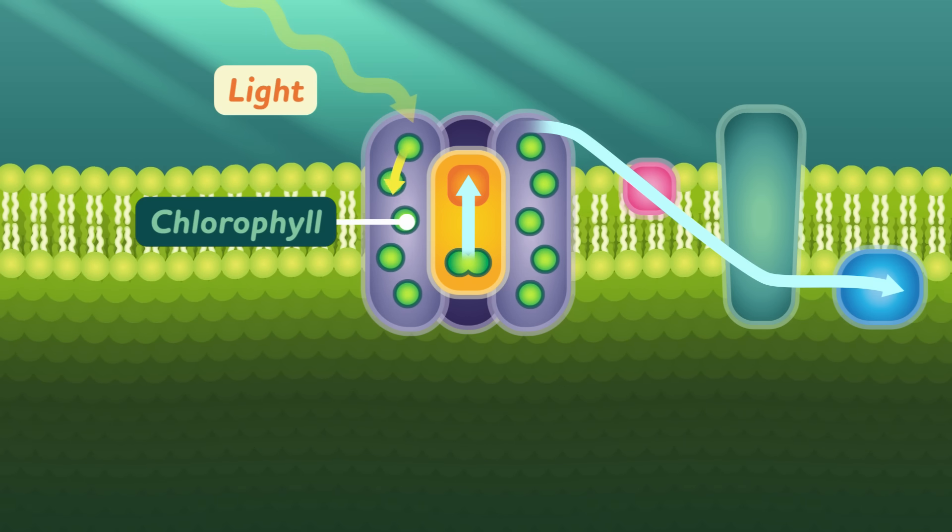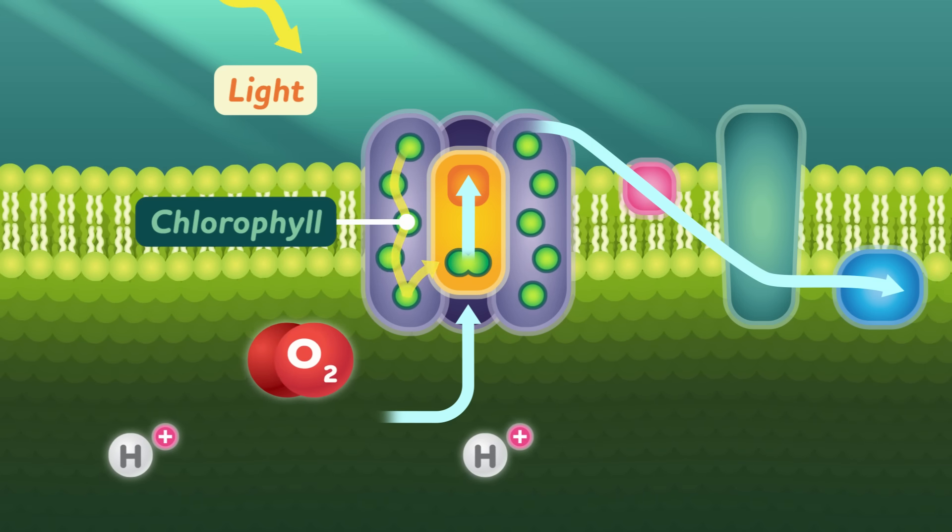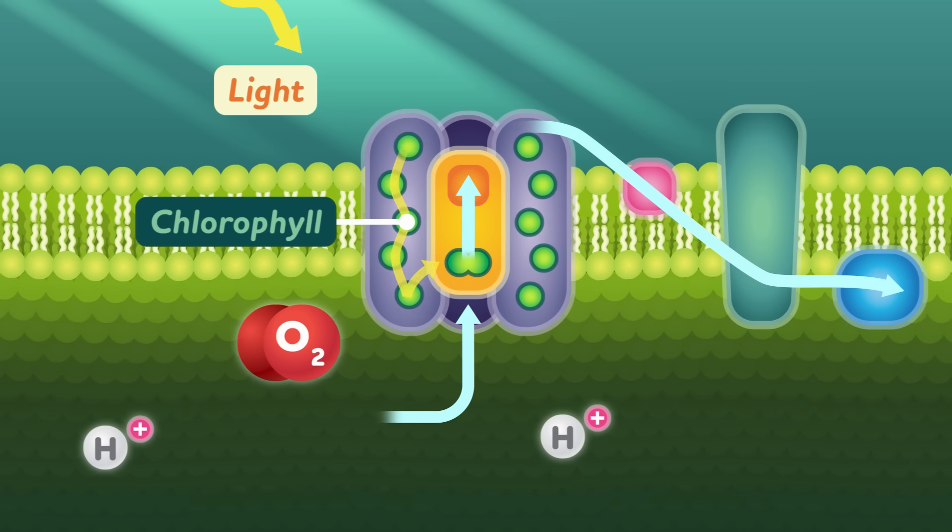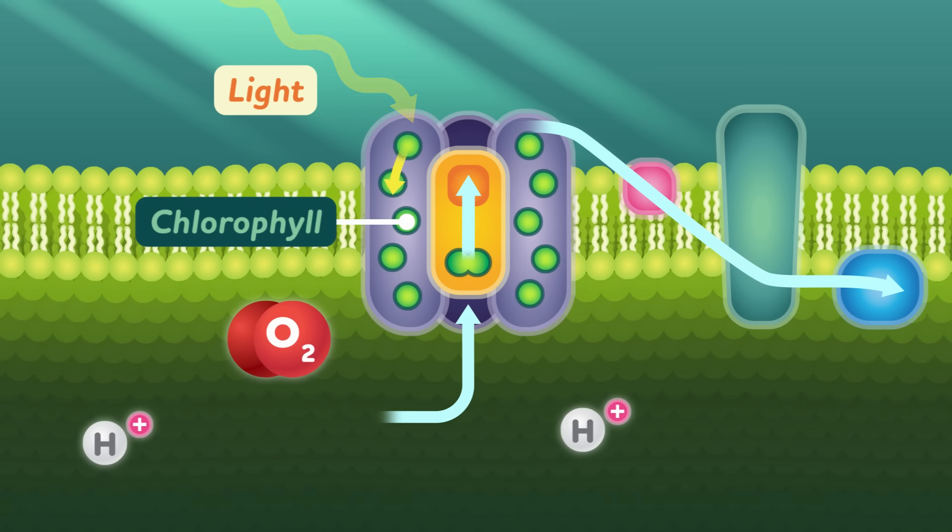Meanwhile, to replace what it lost, the chlorophyll steals a pair of electrons from a water molecule. The water can't handle losing its hydrogen and has a breakdown of its own, releasing oxygen. That's right! One of the byproducts, or unintended products, of this first act is oxygen.